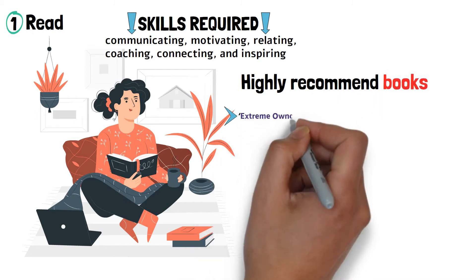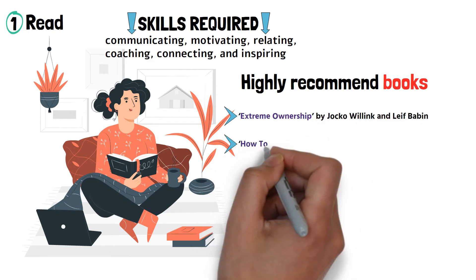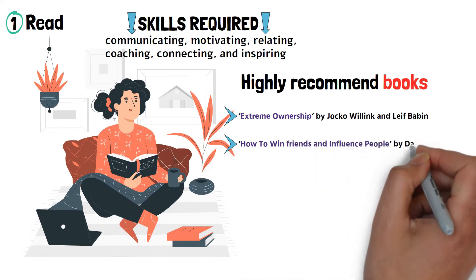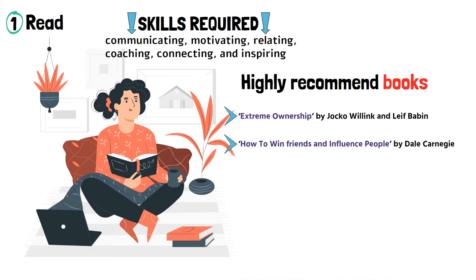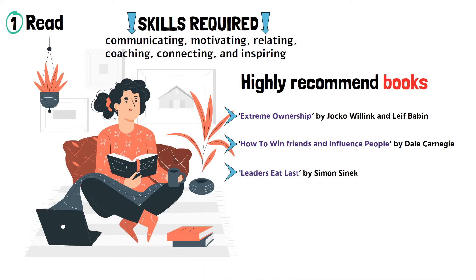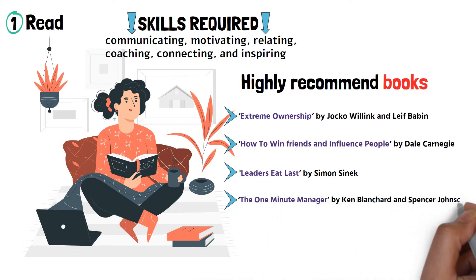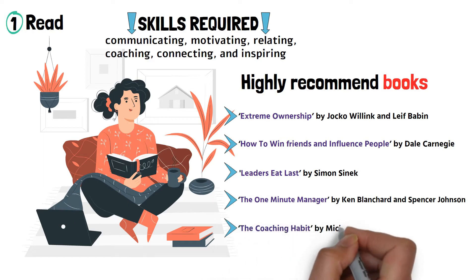Number one: Extreme Ownership by Jocko Willink and Leif Babin. Number two: How to Win Friends and Influence People by Dale Carnegie. Number three: Leaders Eat Last by Simon Sinek. Number four: The One Minute Manager by Ken Blanchard and Spencer Johnson. Number five: The Coaching Habit by Michael Stanier.